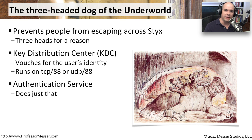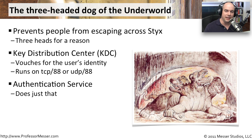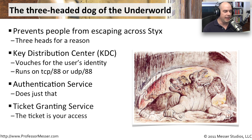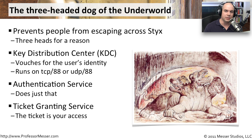The second head of the three-headed dog is the Authentication Service, which authenticates us and provides us access to the network. The third head is the Ticket Granting Service, which provides us with tickets. In Kerberos, tickets are pretty important — you're given tickets that gain you access to resources on the network.